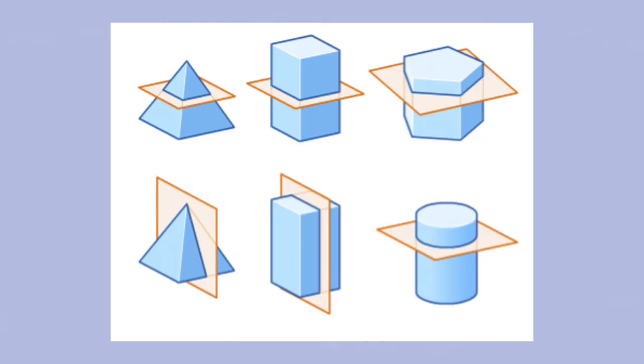What if we take a horizontal cross-section of this 3D shape? What kind of shape would we get?